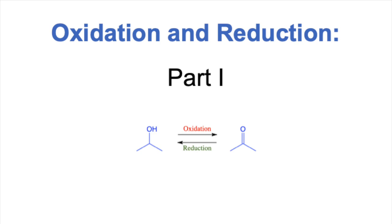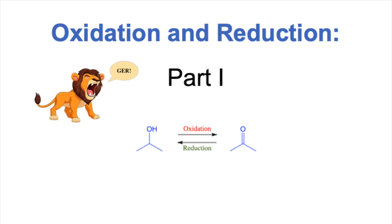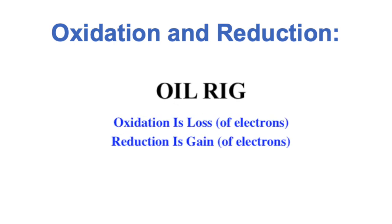You certainly learned a good bit about redox chemistry in general chemistry. You might remember that an oxidation is a loss of electrons and a reduction is a gain of electrons. There are a couple of really commonly encountered mnemonic devices. There's Leo the Lion Goes Grr, which stands for loss of electrons is oxidation and gain of electrons is reduction. I much prefer oil rig — oxidation is loss of electrons and reduction is a gain of electrons.